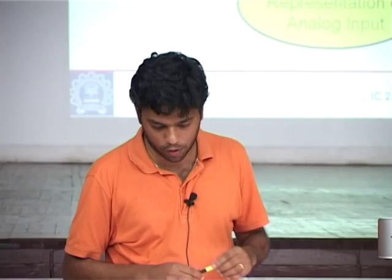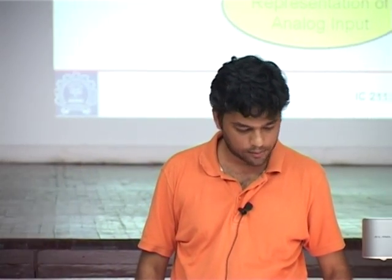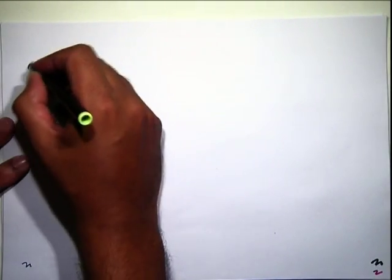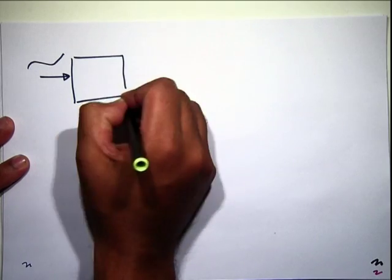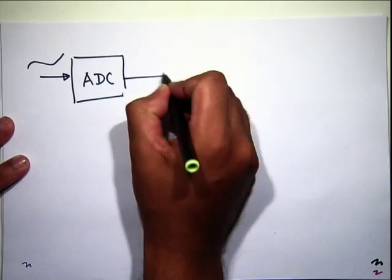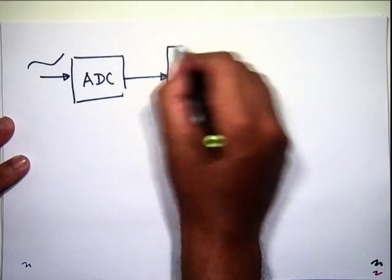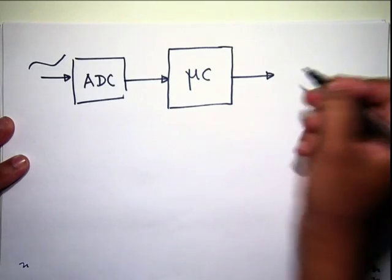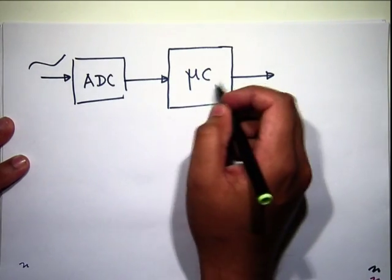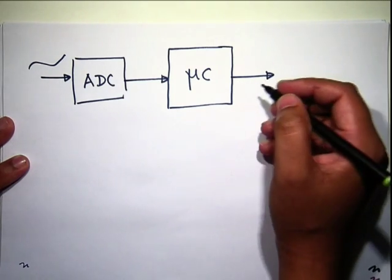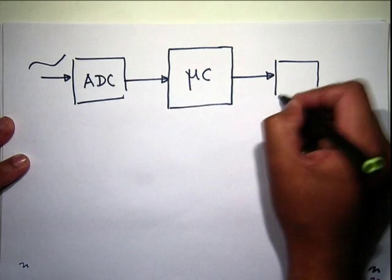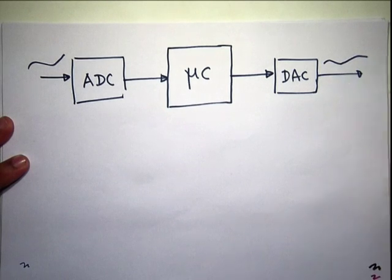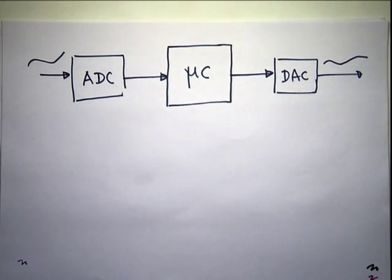What we are talking about is an analog signal going into an ADC, quantized information coming out which is sampled by a microcontroller, which processes it and produces some other quantized discrete-time information, which then goes through a DAC to produce another analog signal.